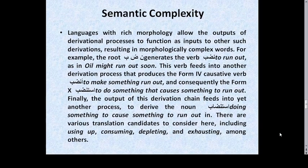Semantic Complexity: Languages with rich morphology allow the outputs of derivational processes to function as inputs to other derivations, resulting in morphologically complex words. For example, the root ن-ض-ب (n-ḍ-b) generates the verb نَضَبَ meaning 'to run out' (as in 'oil might run out soon'). This feeds into a causative derivation أنضَبَ meaning 'to make something run out,' and then استَنضَبَ meaning 'to do something that causes something to run out,' and finally the noun استنضاب meaning 'doing something to cause something to run out.' Translation candidates include 'using up,' 'consuming,' 'depleting,' and 'exhausting.'